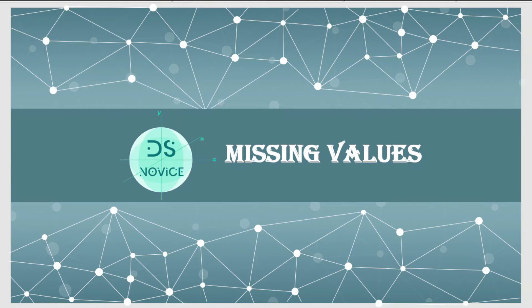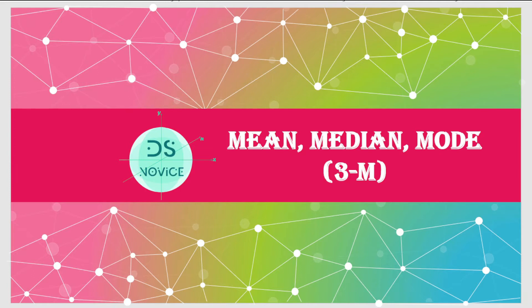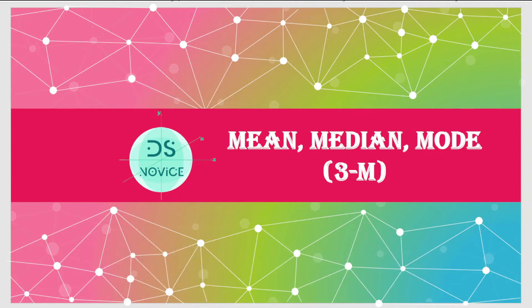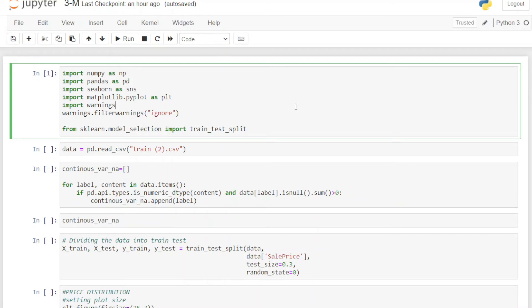As of now we are learning techniques for missing values imputation, and today we have another technique — the 3M or Mean Median Mode technique. I have already talked about this in my previous video, and in this video we are going to do a Python implementation on actual data. I have already prepared the notebook and will explain each line of code. The link for this notebook is in the description box — don't forget to follow me on GitHub, I have some amazing repositories there.